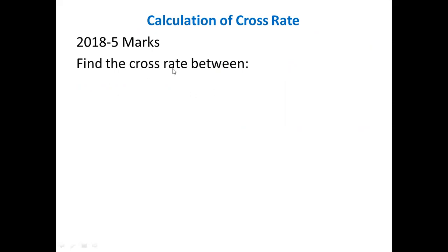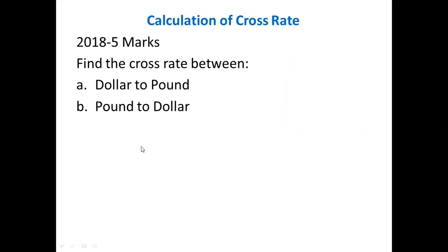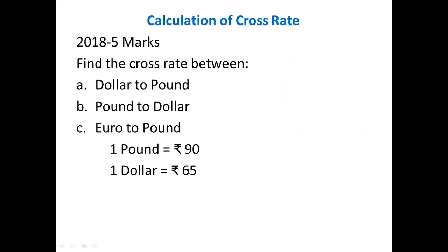We will take one problem from the 2018 question paper for 5 marks. Find the Cross Rate between: (a) Dollar to Pound, (b) Pound to Dollar, and (c) Euro to Pound. Given: one Pound equals to 90 Rupees, one Dollar equals to 65 Rupees, one Euro equals to 90 Rupees. We will calculate the Cross Rate.